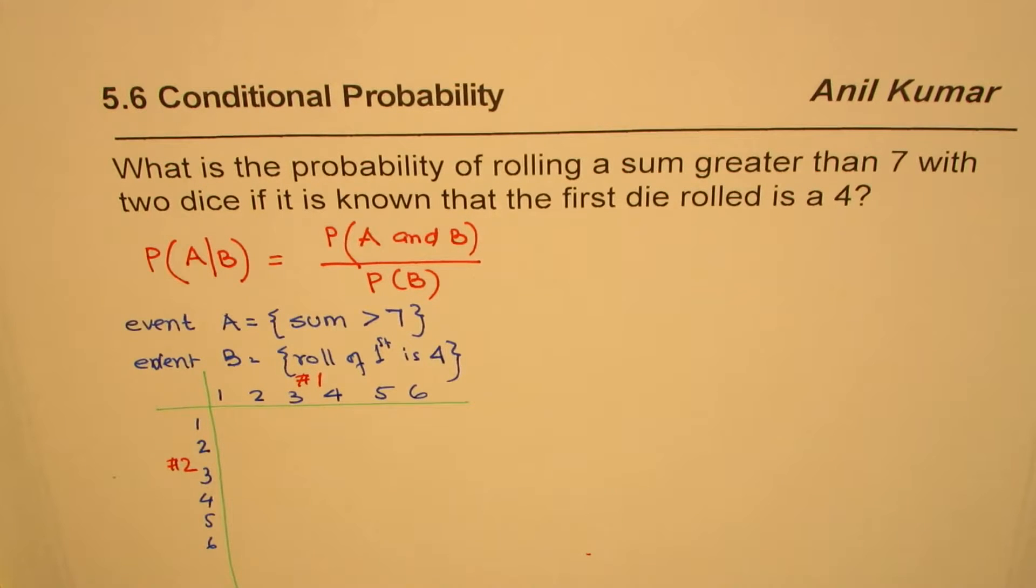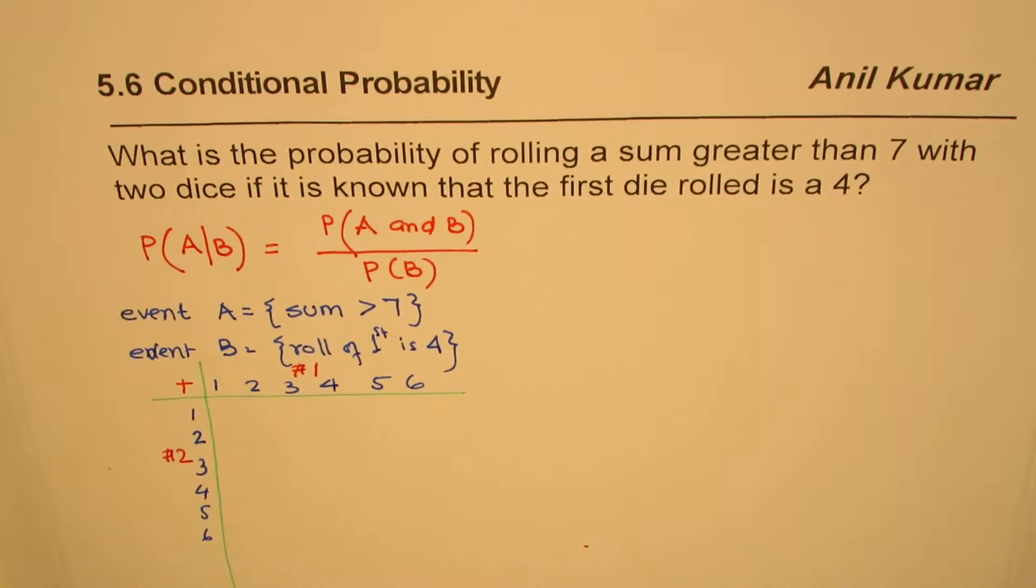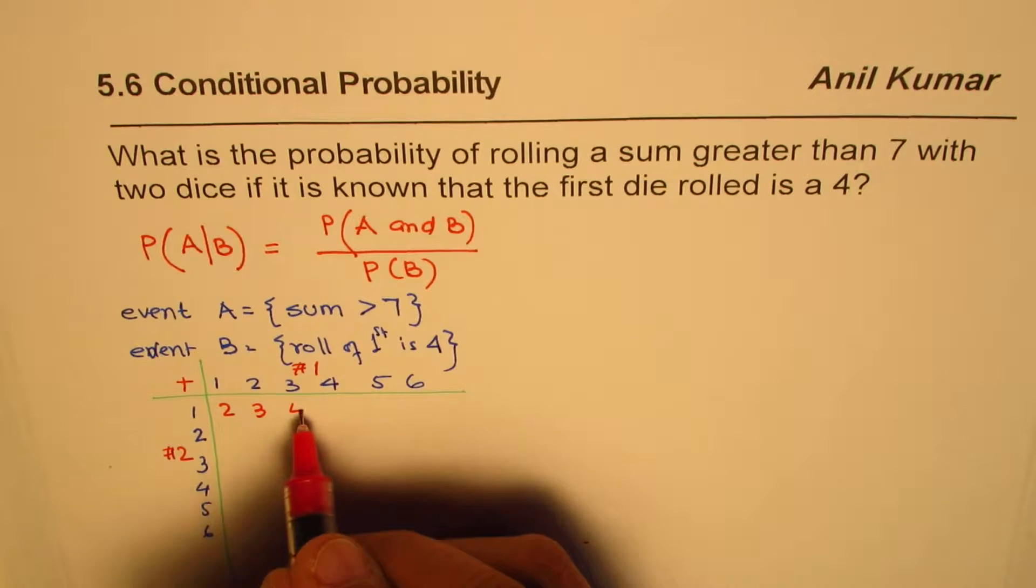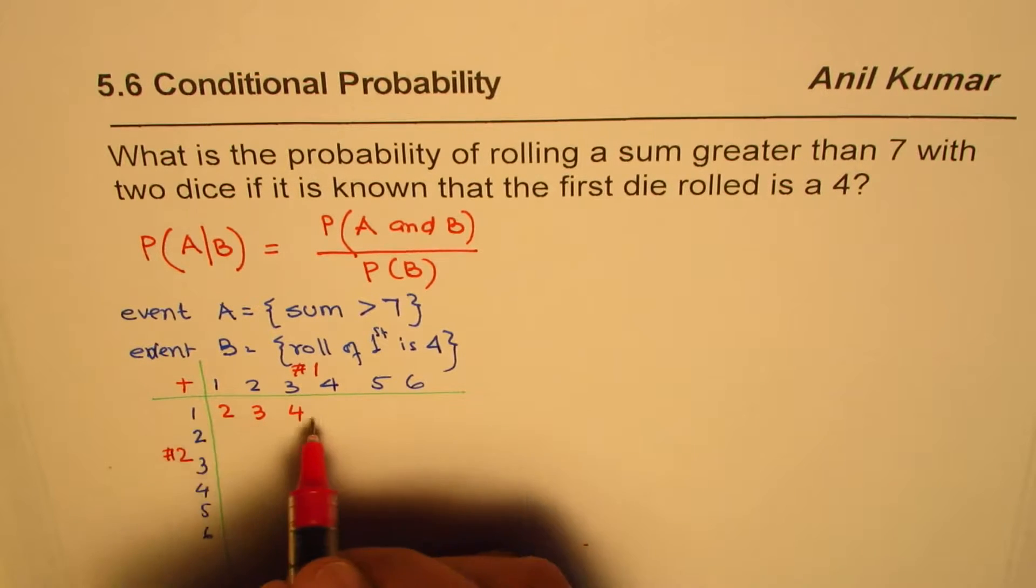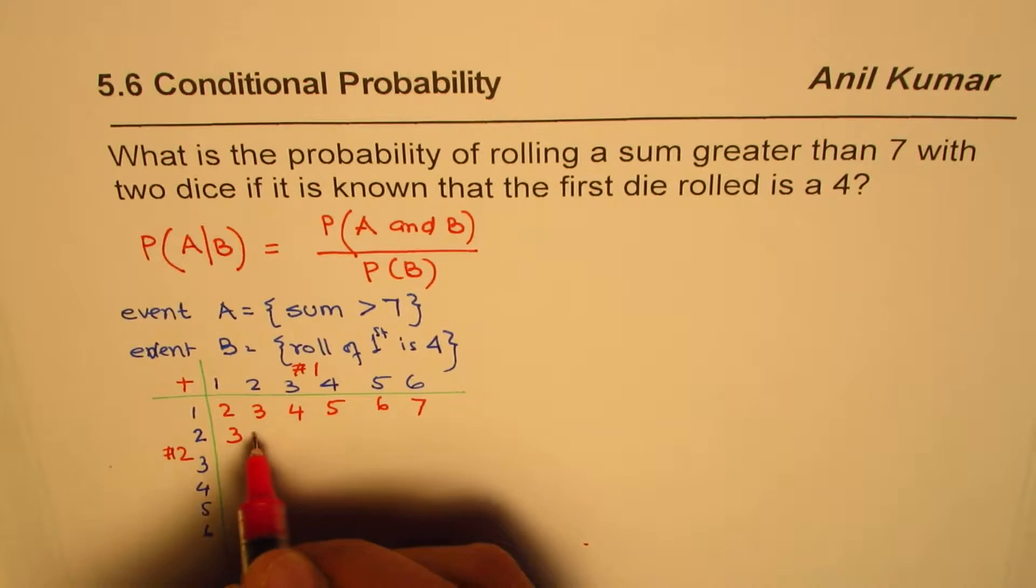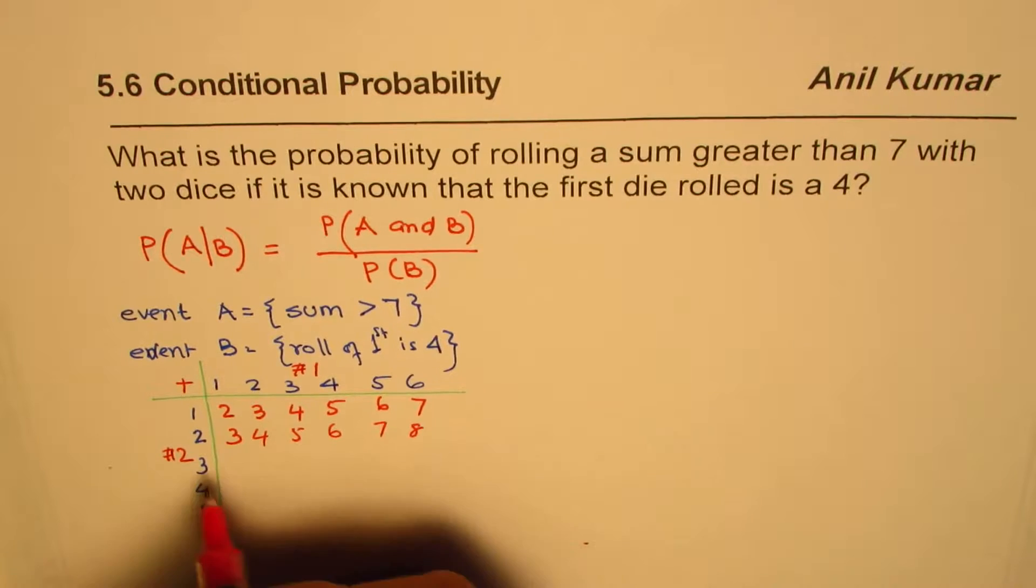The operation being performed here is plus. So when you add 1 and 1, you get 2. 1 plus 2 is 3. Now you can just fill in all these numbers, adding the sum of die 1 and 2. So 5, 6, 7. This gives us 3, 4, 5, 6, 7, 8.